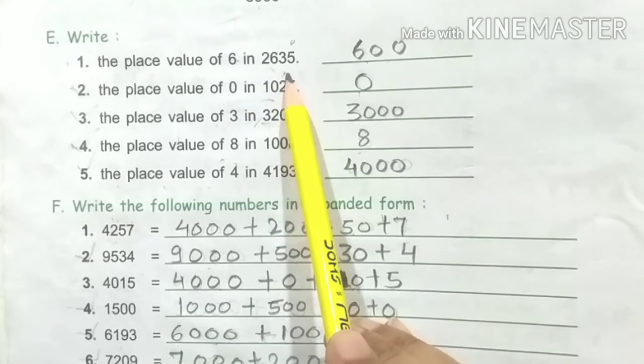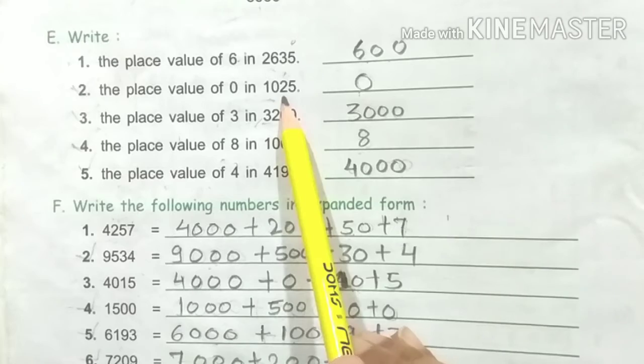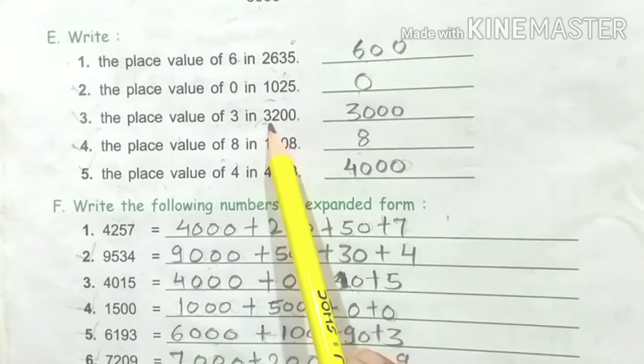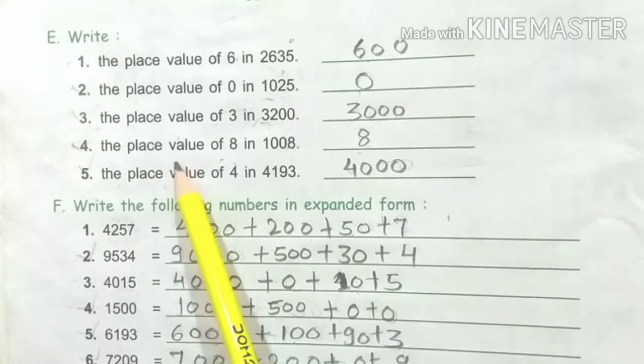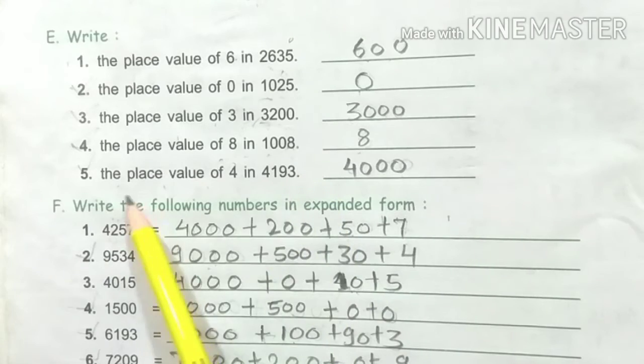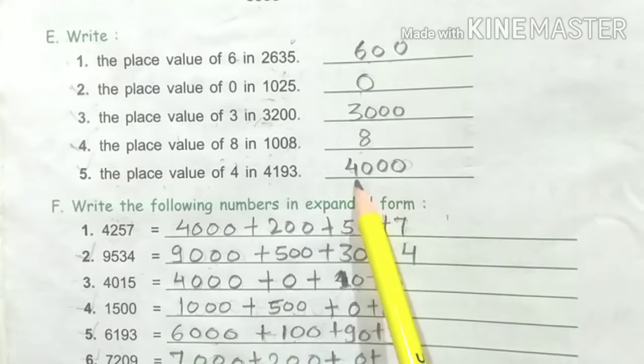The place value of 6 in 2635 is 600. The place value of 0 in 1025 is 0. The place value of 3 in 3200 is 3000. The place value of 8 in 1008 is 8. The place value of 4 in 4193 is 4000.